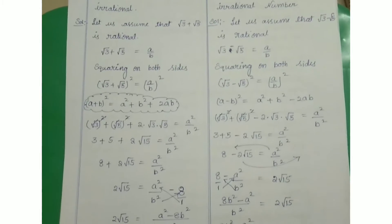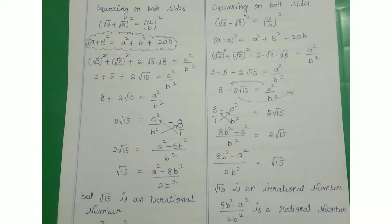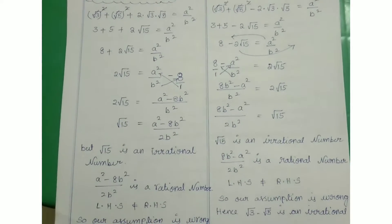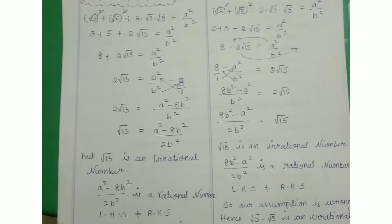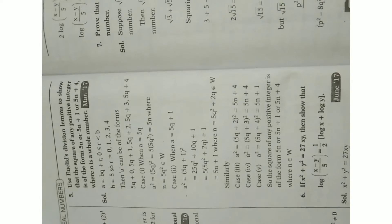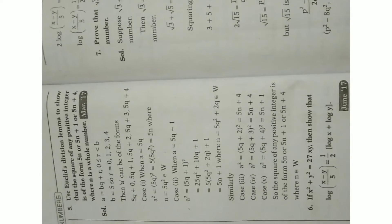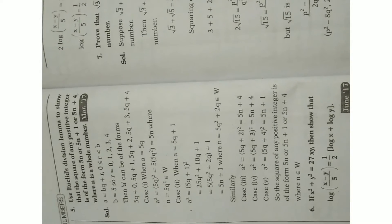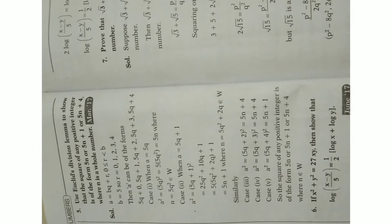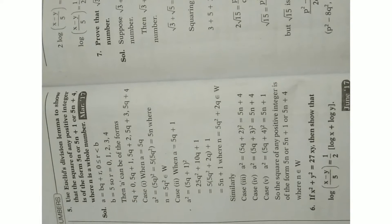Go through each and every step clearly, as these are the most important 8-mark questions. Question number three: use Euclid's division lemma to show that the square of any positive integer is of the form 5n, 5n+1, or 5n+4, where n is a whole number.